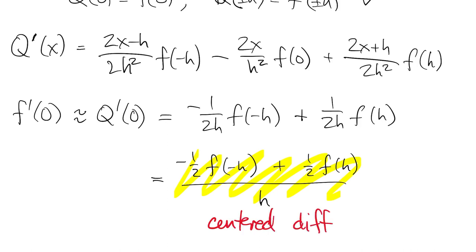Note that f of zero dropped out of the result, even though it was included by q, and that's the result of a symmetry.